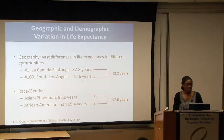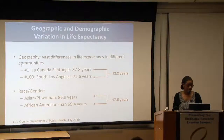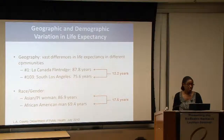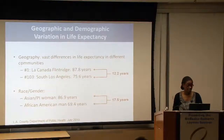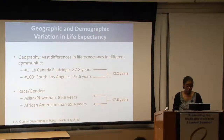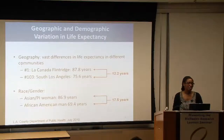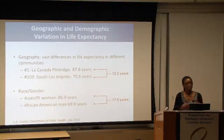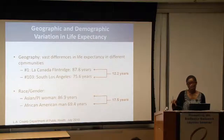Throughout LA County, the highest life expectancy is seen in La Cañada Flintridge and the lowest in South Los Angeles—a difference of over 12 years. By race and gender, for Asian and Pacific Islander women the life expectancy is almost 87 years; for African American men it's less than 70 years, a difference of more than 17 years. This was a wake-up call to many of us in the academic environment, showing the actual consequences of the lack of connection between what we know works and health outcomes that are just not budging the way they should be.